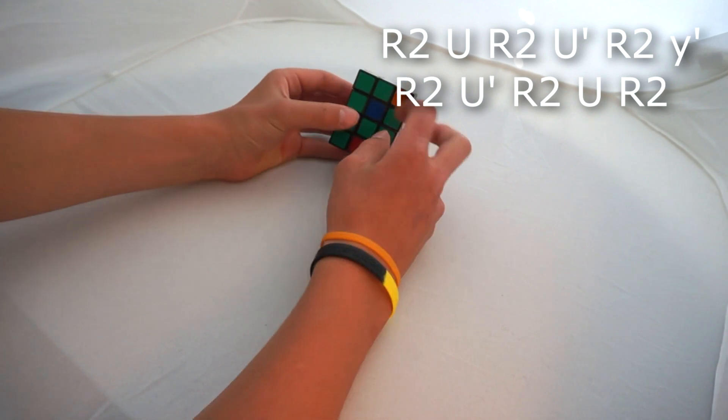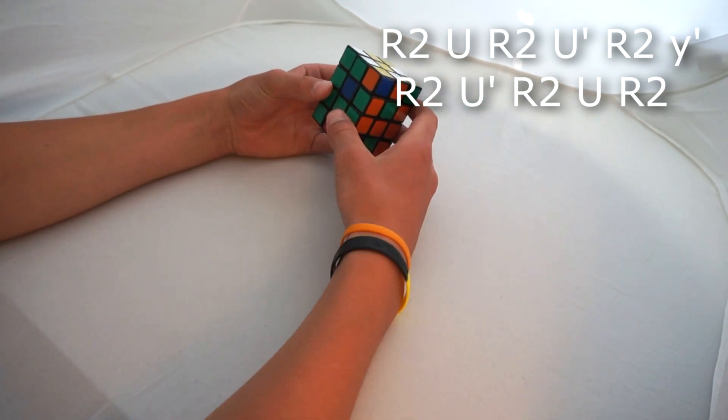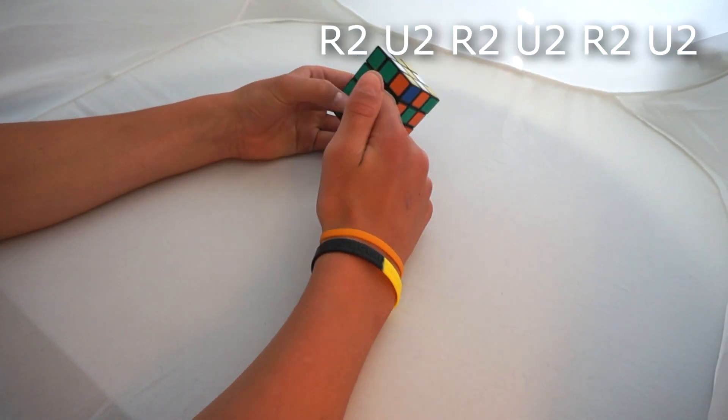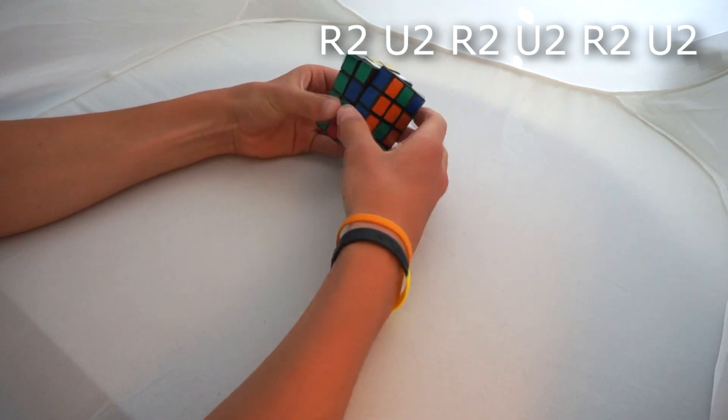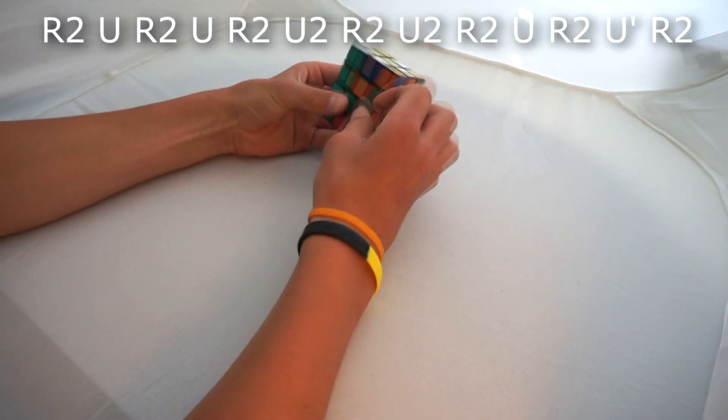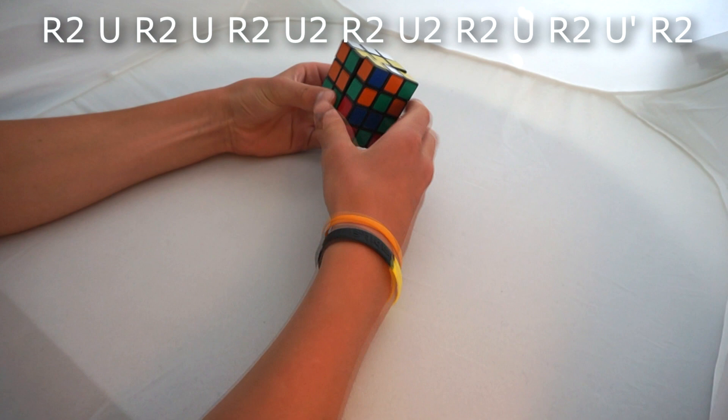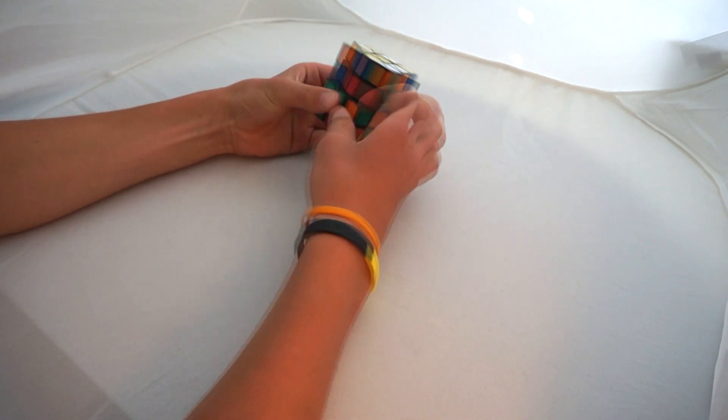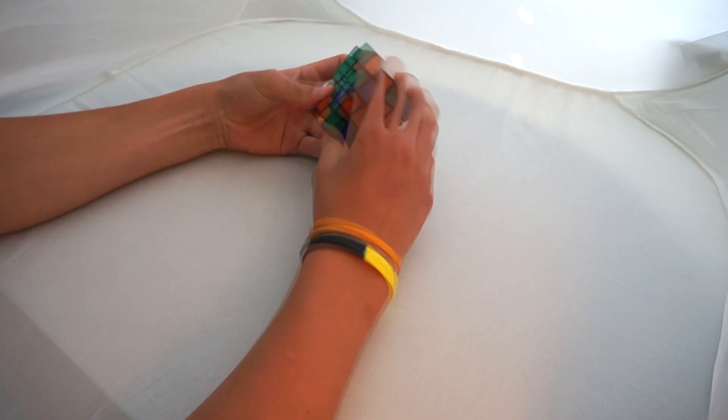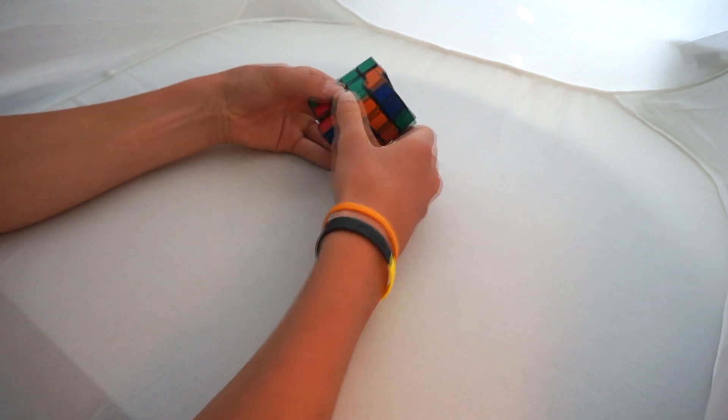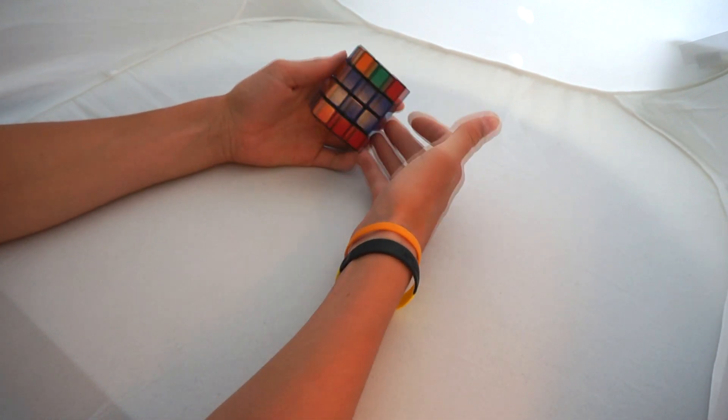You should have all the corners oriented correctly, and then you have to orientate the edges. So just apply the algorithm. There are two algorithms for edges and they're very easy to learn. Okay, so now we solve the middle layers.